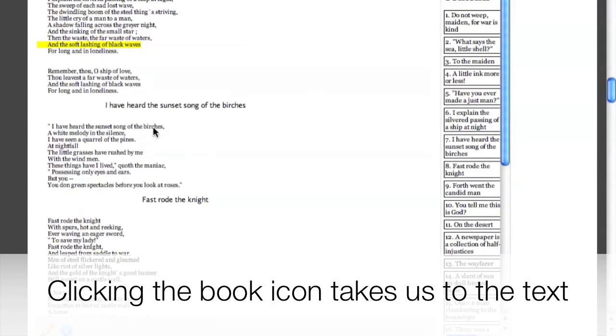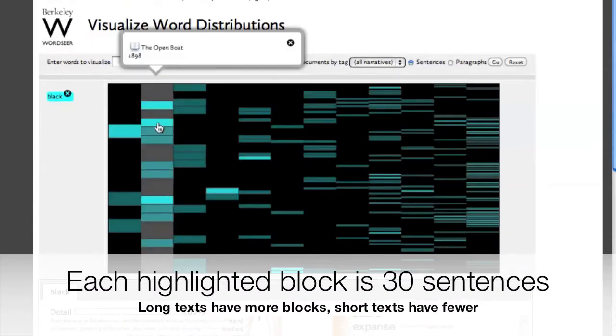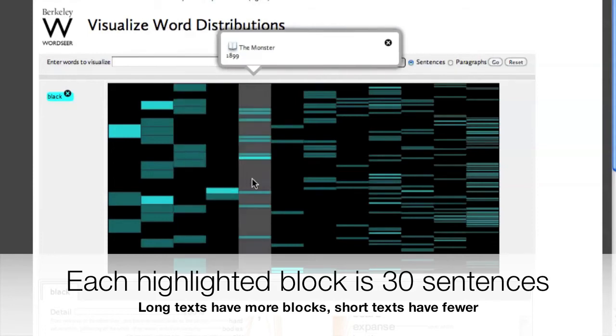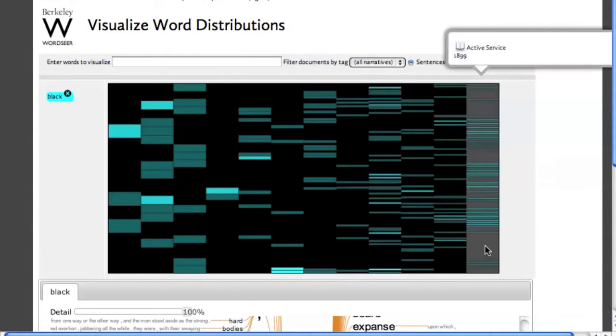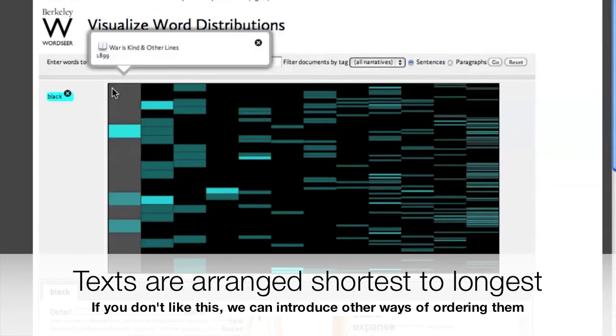We can click on the book icon to go to that particular sentence. The documents are arranged in order from shortest to longest. And they're lined up next to each other so as to appear equal length. This means that the shorter documents are stretched and the longer documents are squeezed.